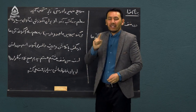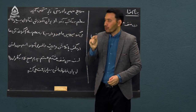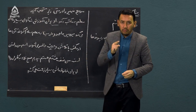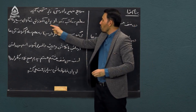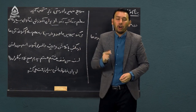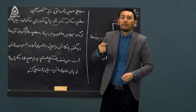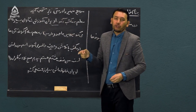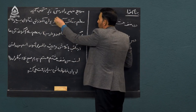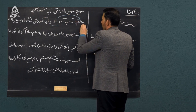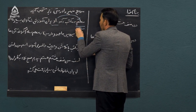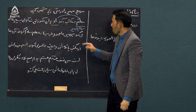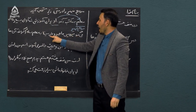اول در داخل متن ضمیرها را پیدا کنید. اولین ضمیر «او» است: «او برای آموزش شاگردان بسیار تلاش می‌کند.» به جمله قبلی برمی‌گردیم: «معلم به مکتب آمد.» پس کلمه «او» به چی برمی‌گردد؟ ضمیر «او» به «معلم» برمی‌گردد و «معلم» می‌شود مرجع ضمیر «او».